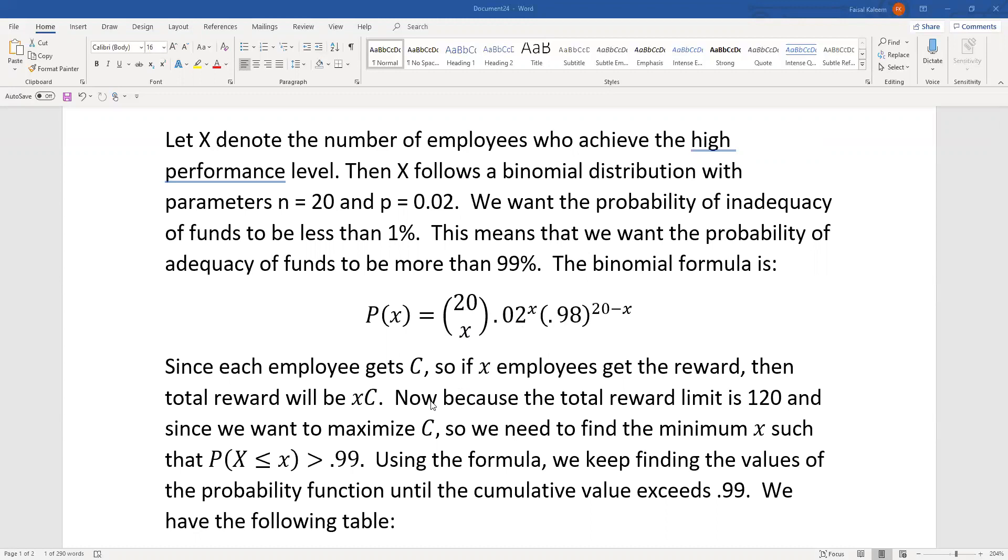The reward limit as we just said is 120, and each employee gets C, so the total reward that will be given out will be X times C, where X is the number of employees who qualify for the reward, and that has to be limited by this 120.